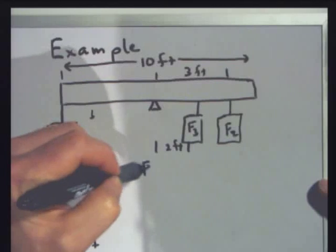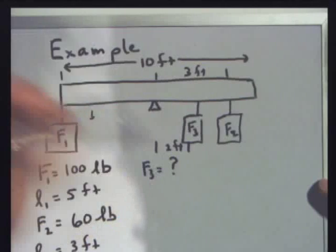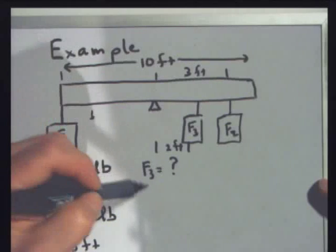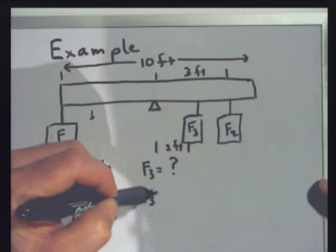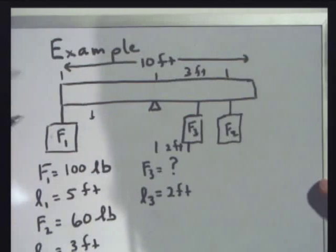So I'll list it again. I've got, I'll list it down here. F3 equals, I don't know what it is, but it's got to balance. It's got to be enough. I know that the moment arm is two feet.